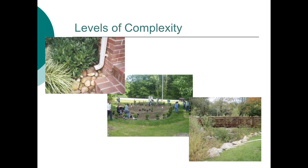The scope of stormwater retrofits can be highly variable. Retrofits can be small, like the simple downspout disconnection shown in the upper left. This type of retrofit has the advantage of being easy and inexpensive, but the actual water quality benefits are often relatively low as well, due mainly to the small size of the contributing drainage area.